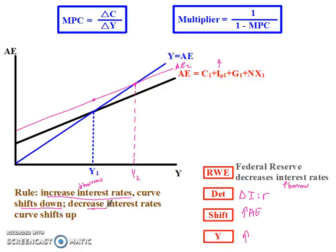And if you decrease interest rates, on the other hand, if you decrease interest rates, then the curve will shift up. So let's say that rule one more time: increase interest rates, curve shifts down. Decrease interest rates, curve shifts up.